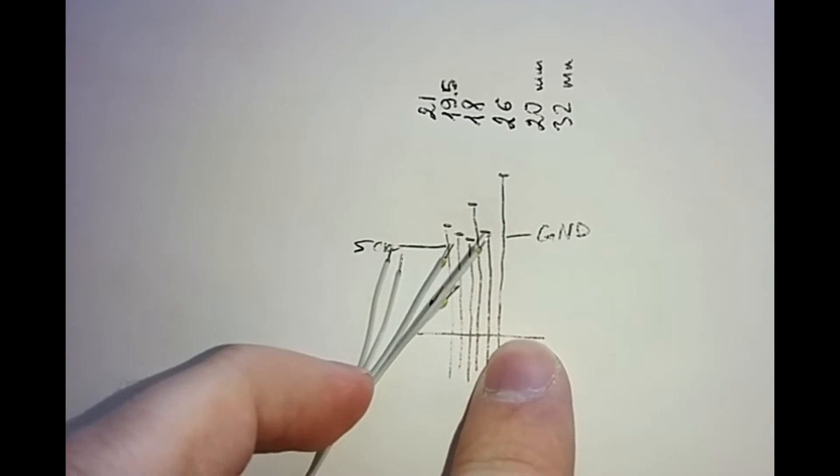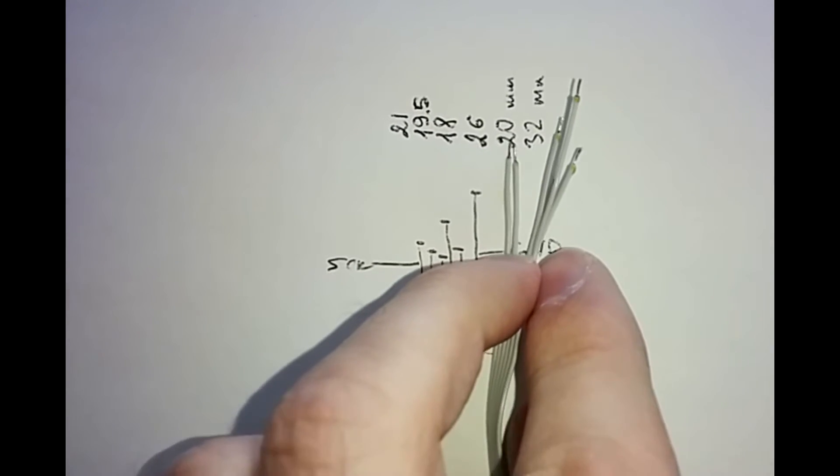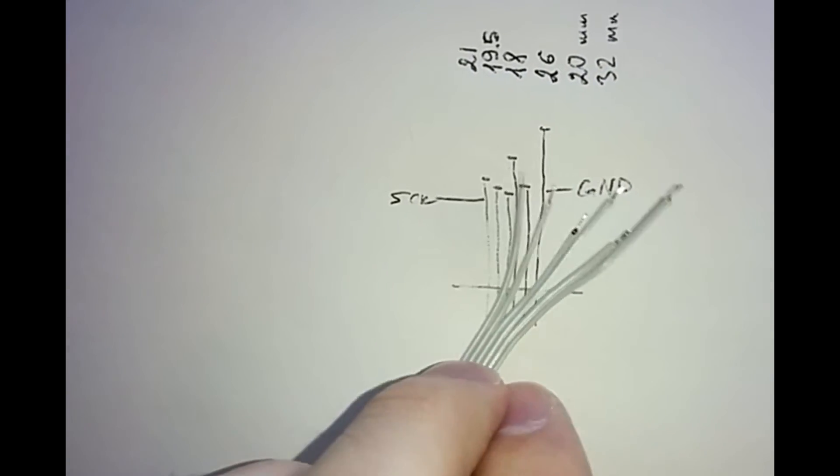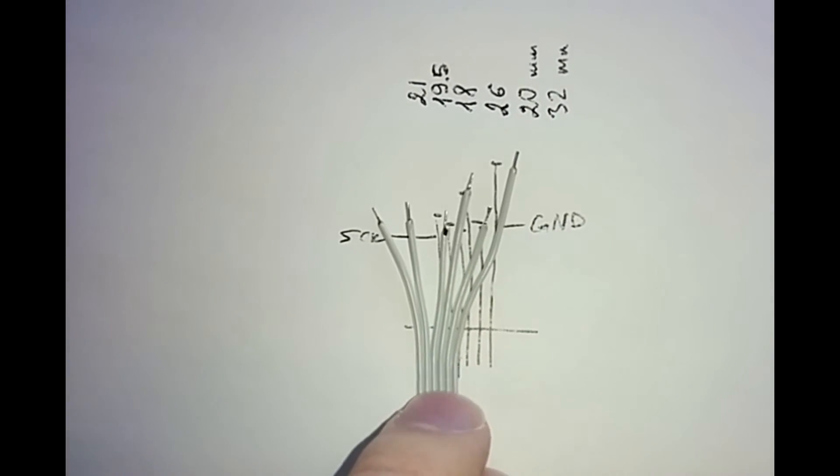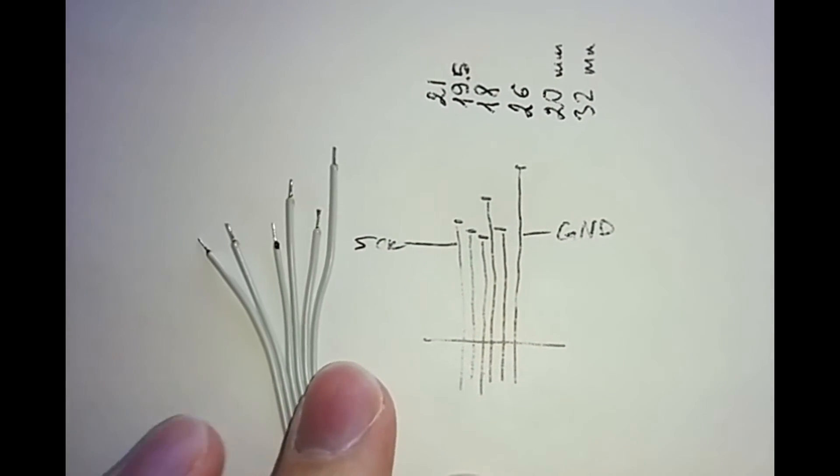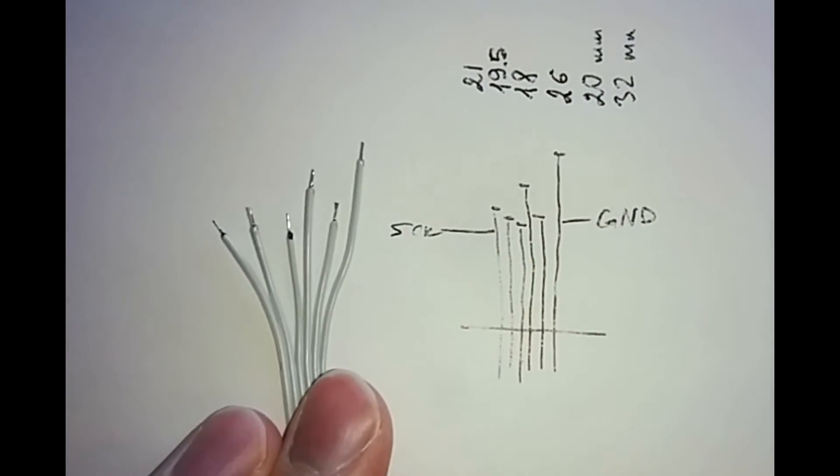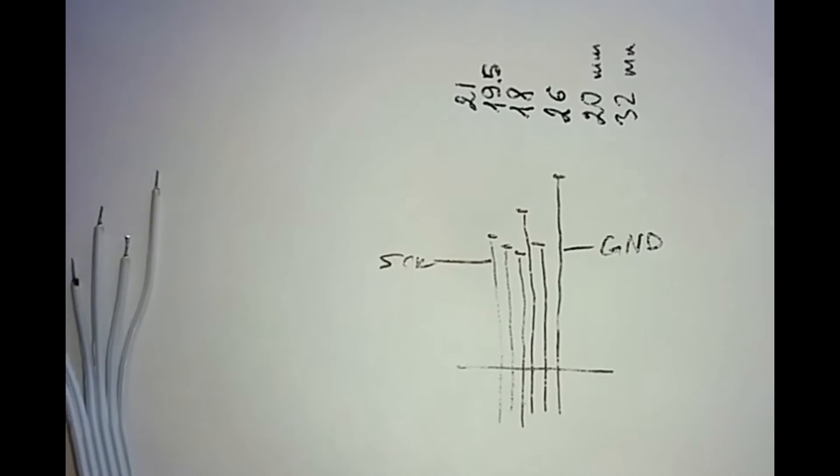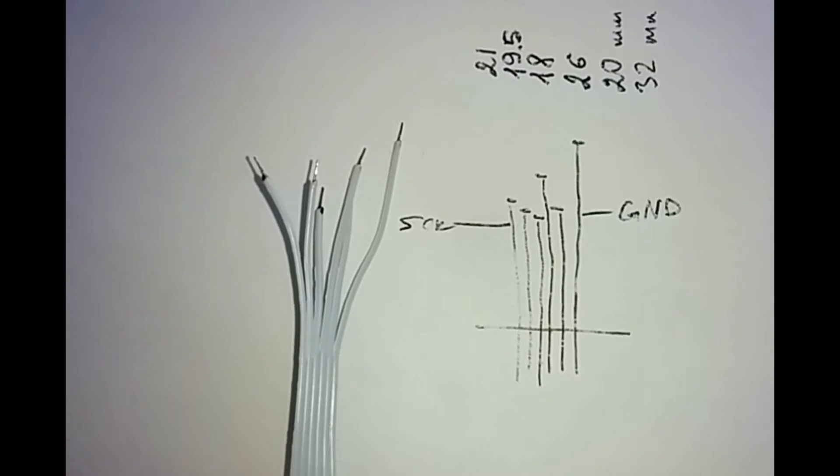And so the first pin on the right is ground and you cut back to 32 millimeters from whatever some random start point and then the other ones are lined up as so: 20, 26, 18, 19.5 and 21 millimeters in length. This is pretty much it for the second step.